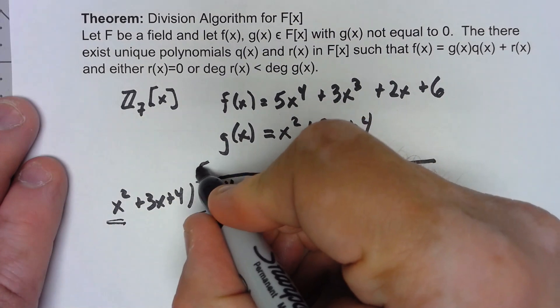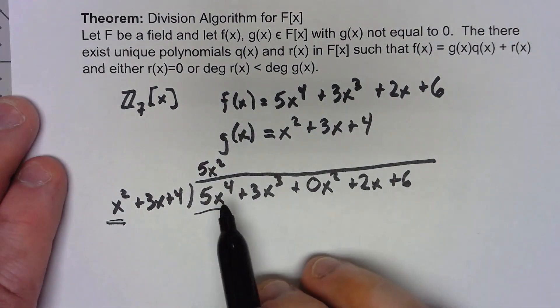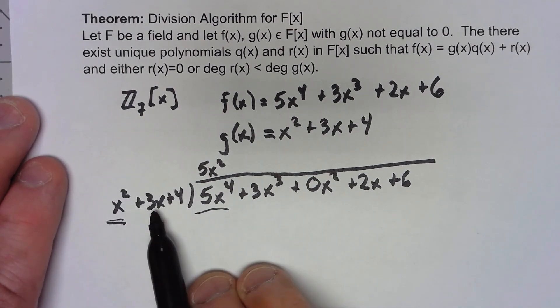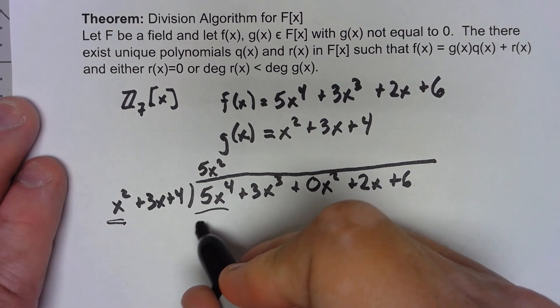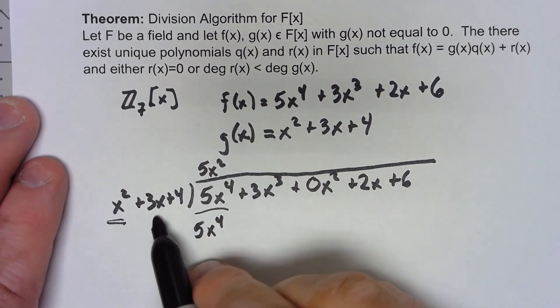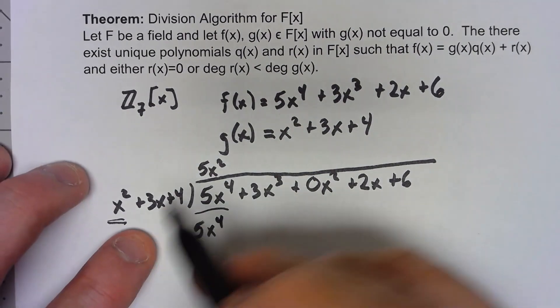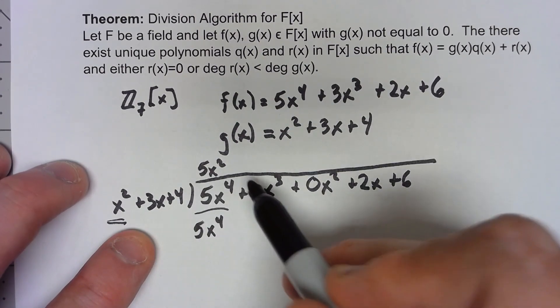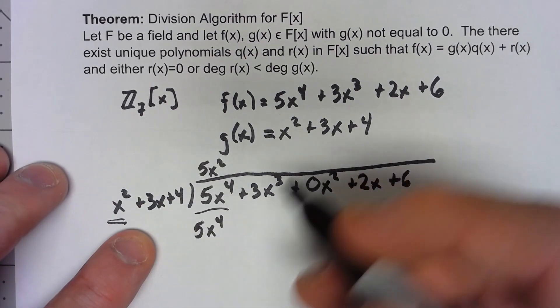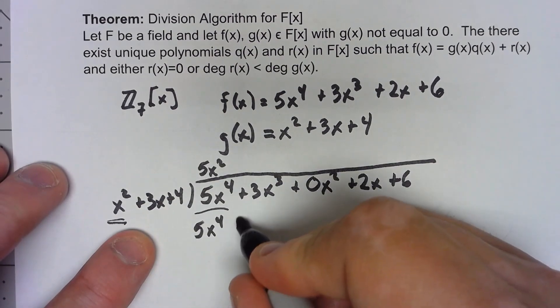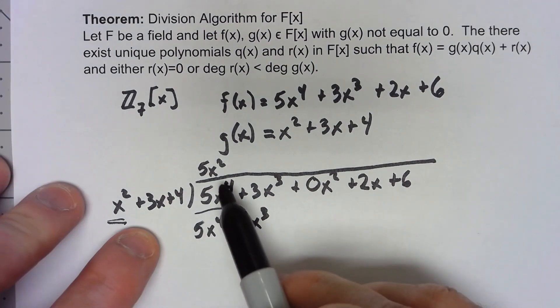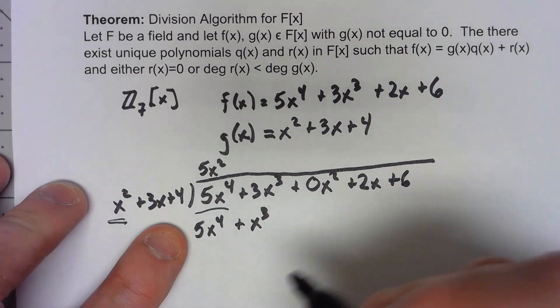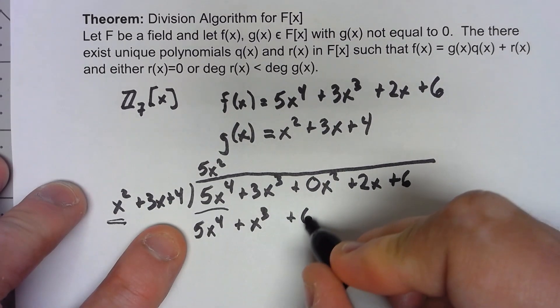In this case, that's 5x squared. Then standard long division, whatever I put on top gets multiplied by what's in front, but now I'm going to multiply by the whole thing in front. So I'm going to get 5x to the fourth, 5x squared times 3x. Now if we were working in just the integers or the real numbers, that would be 15x cubed, but we are working in Z7. So 15x cubed is really just x cubed. Similarly, 5x squared times 4 would be 20x squared, but mod 7, that's 6x squared.